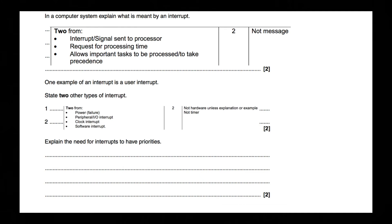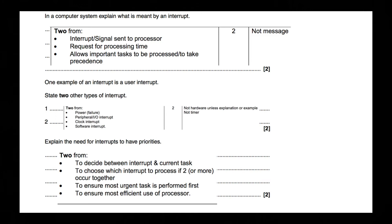Now, explain the need for interrupts to have priorities. There are two marks, so you can get either two of these: to decide between interrupt and current task; to choose which interrupt to process if two or more occur together; to ensure the most urgent task is performed first; to ensure most efficient use of the processor. The two main ones I'd remember are: 'to decide between interrupt and current task', and 'to ensure most efficient use of processor'.